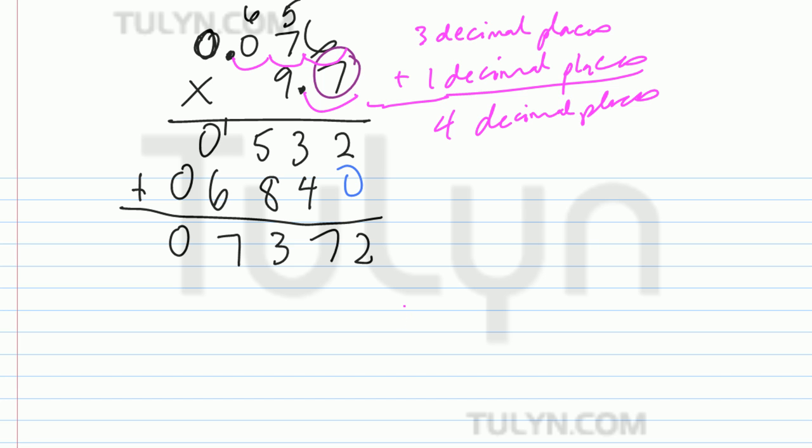Now go down to the bottom where you have your product, your final answer. The whole number has an imaginary decimal in the back. Move it one, two, three, four spots. I'm going to use black ink for the final decimal. It's 0.7372 or 7,372 ten-thousandths.